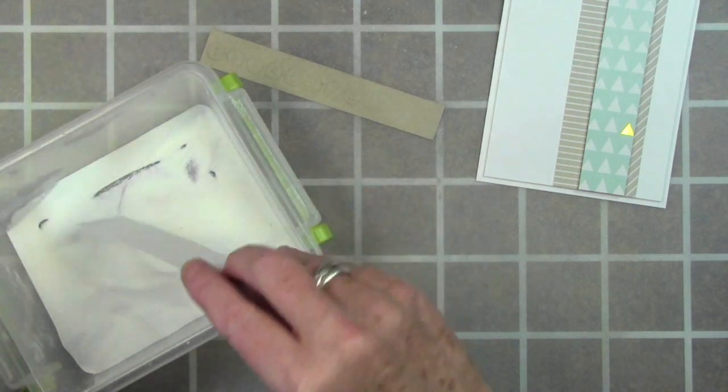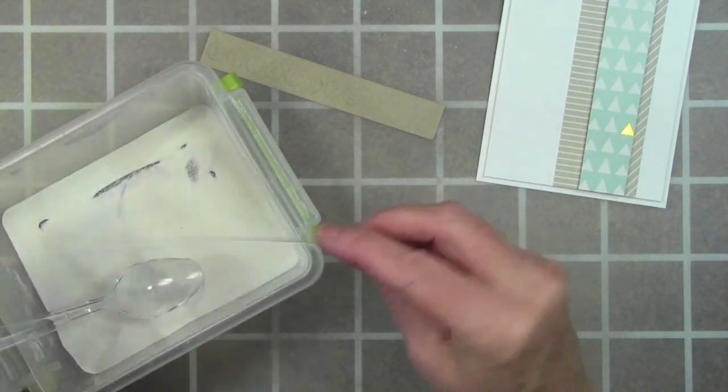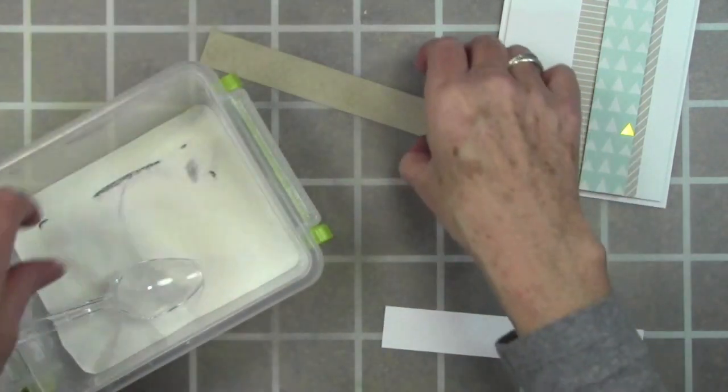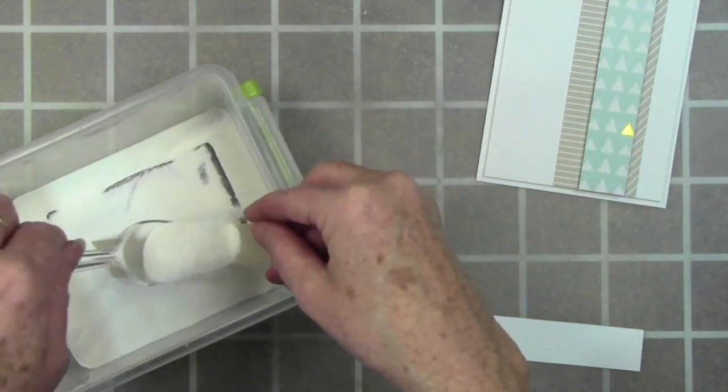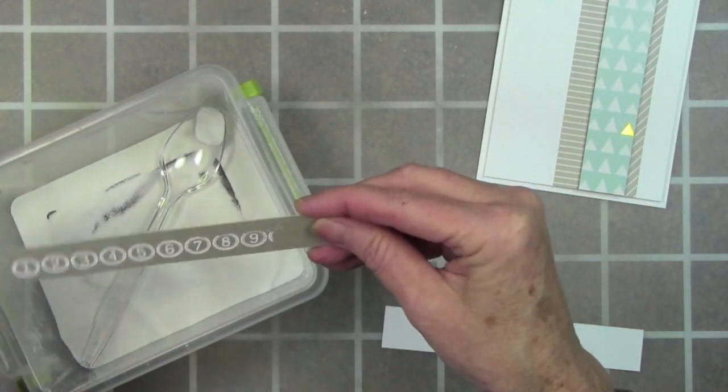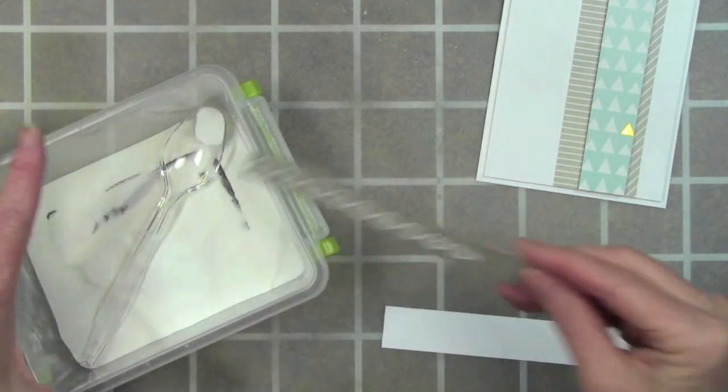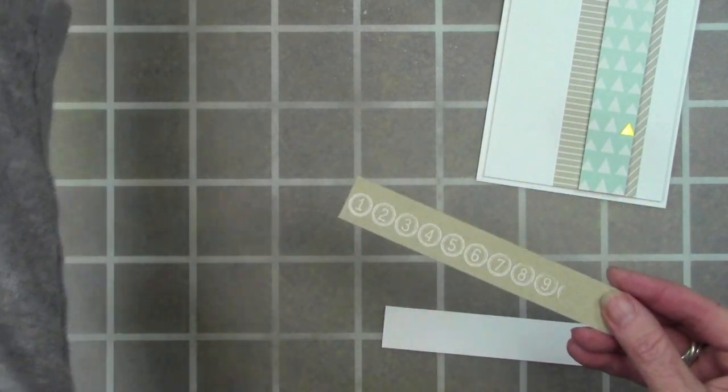I'll be using white embossing powder for both pieces, so I'll go ahead and sprinkle on my powder and tap off the excess. I'll do the same to my Desert Storm piece. Once I have all the excess off, I can go ahead and heat this with my heat tool.